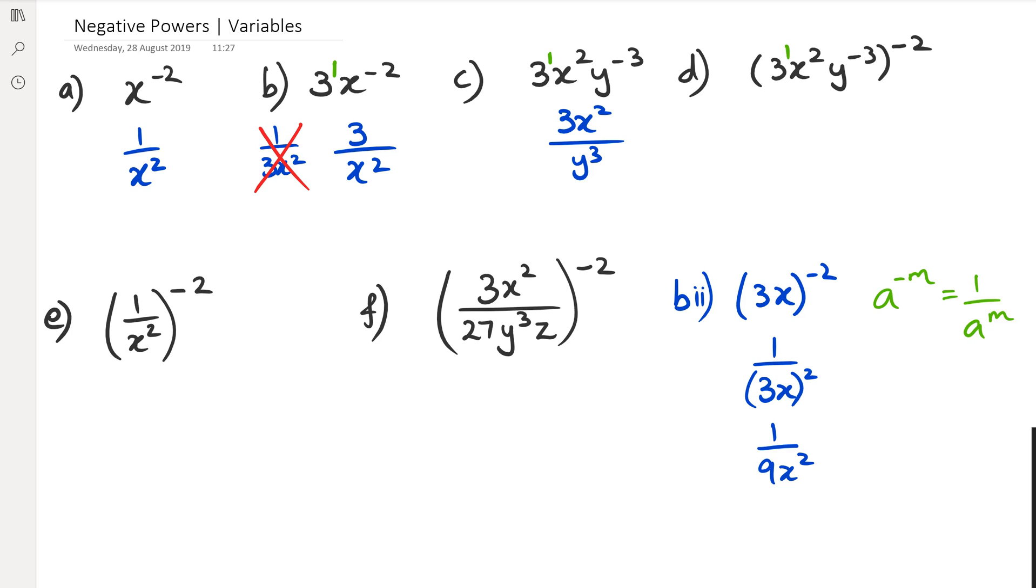So 3 has a power of 1. So that means 3 now, when I multiply the powers of powers, 1 times negative 2 is negative 2. And then x is going to be 2 times negative 2, which is negative 4. And then y is going to be negative 3 times negative 2, which equals to positive 6.